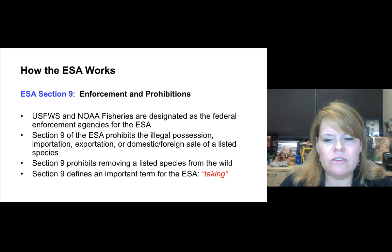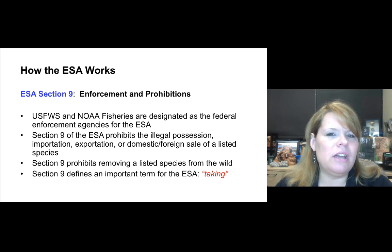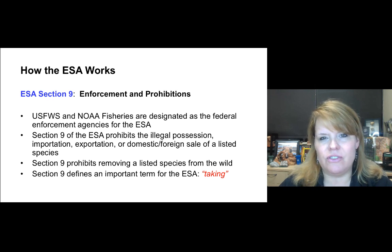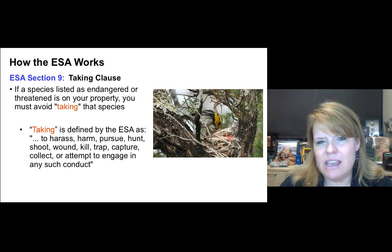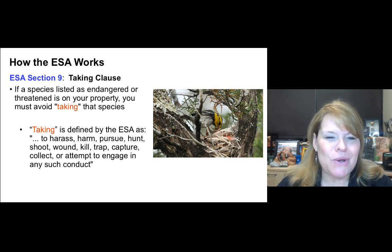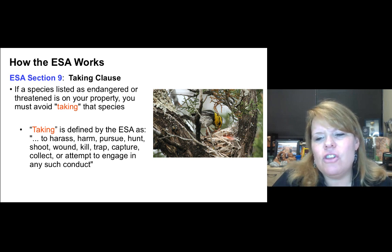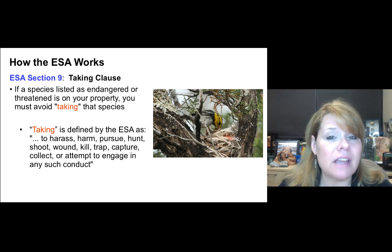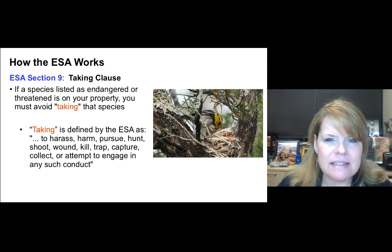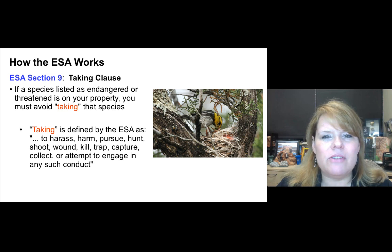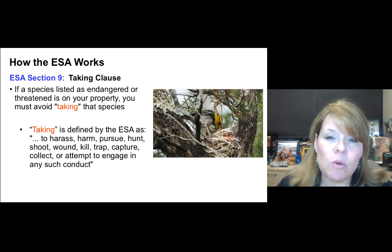Section nine also prohibits removing a listed species from the wild, and it defines a super important term called taking. If you take the habitat of a listed species, you're in violation of section nine. For example, if you cut down a tree that's a known nesting site of the golden-cheeked warbler — an endangered bird in Texas — you'd be guilty of taking. That's a guaranteed test question.